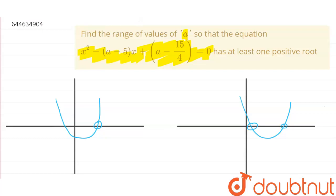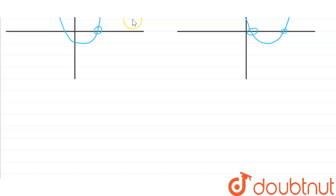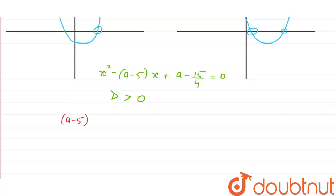The equation given is the quadratic: x squared minus (A minus 5) times x plus (A minus 15/4) equals 0. For having at least one root positive, the discriminant D should be greater than 0. So we will find D.